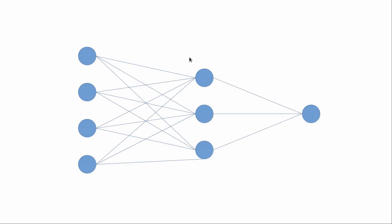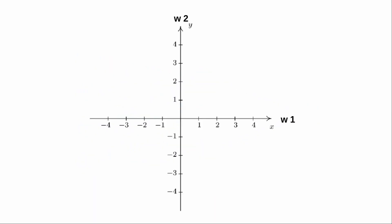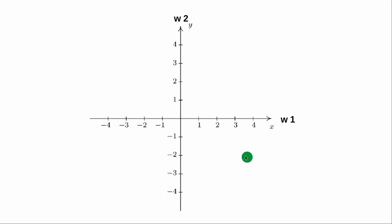Let's talk about neural networks and the genetic algorithm. This is a very simple neural network — it has four inputs, one output, and a lot of weights and biases. There are an infinite number of possibilities for these weights and biases. To illustrate, imagine we have only two weights, so I can show it in a 2D coordinate system. Even for just two weights, there are infinite possibilities — for example, values like (1,1), (1,2), and so on.